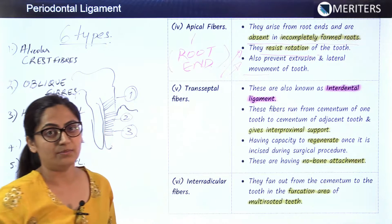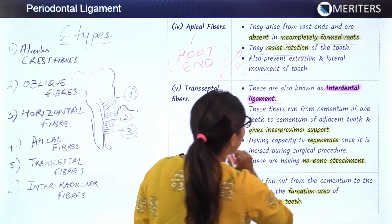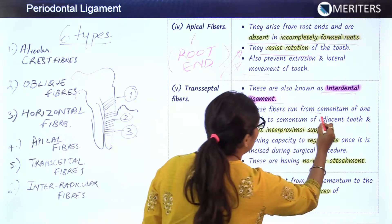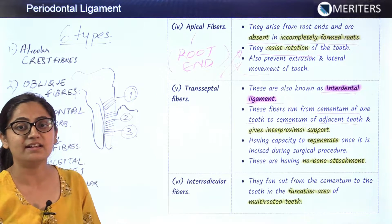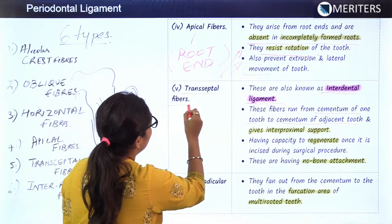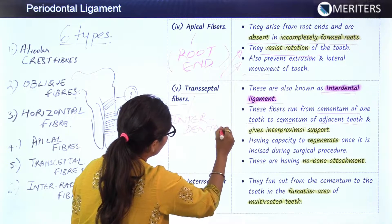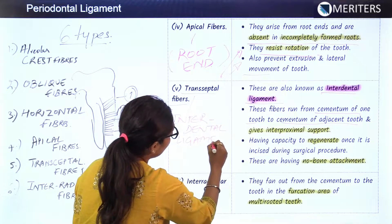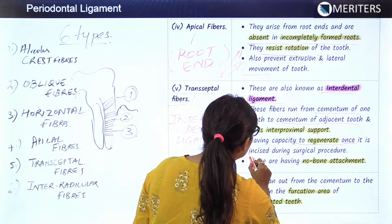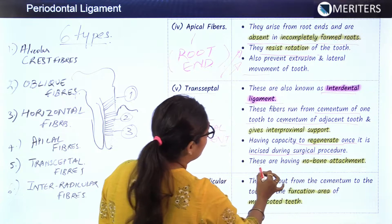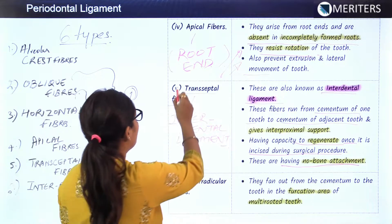The fifth fiber is the transeptal fibers, also known as the interdental ligaments. These fibers run from the cementum of one tooth to the cementum of an adjacent tooth interproximally. An important function is that they have the capacity to regenerate once incised during a surgical procedure, and they have no bone attachment.